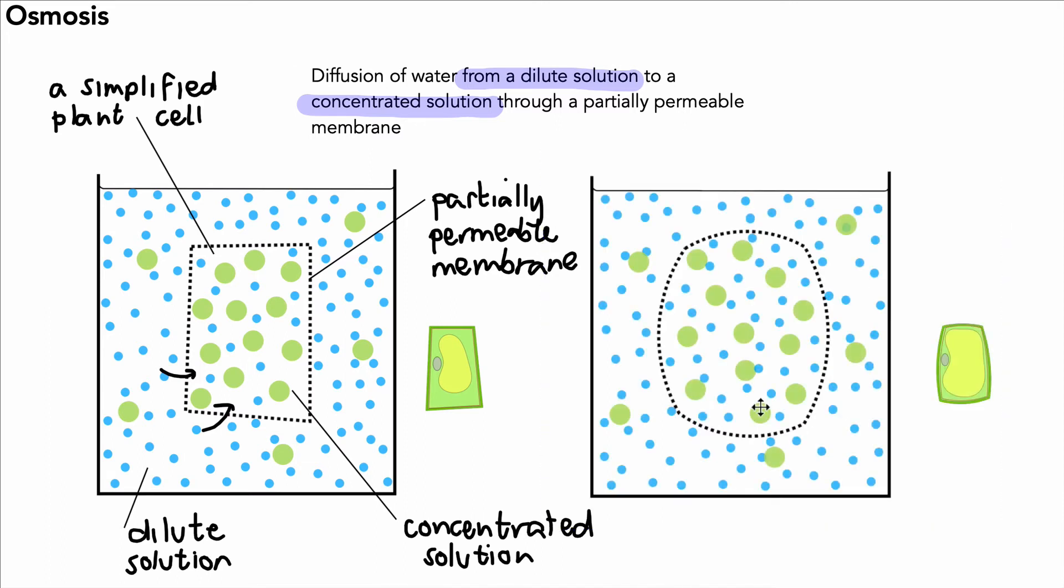So what would it look like in this case? The cell would swell. It wouldn't burst because there's a cell wall on the outside, but it certainly would swell. And we say the plant cell has become turgid - that just means tightly packed full of water. So that's one example.